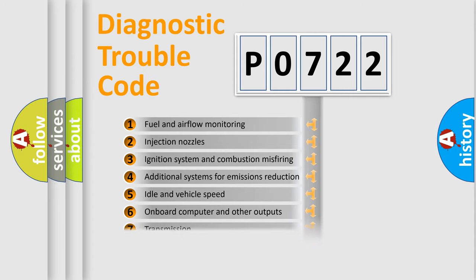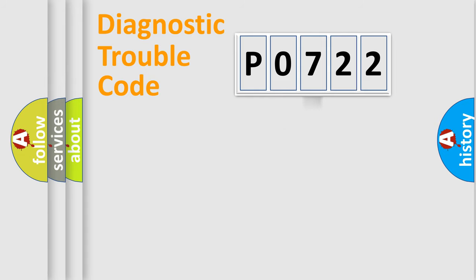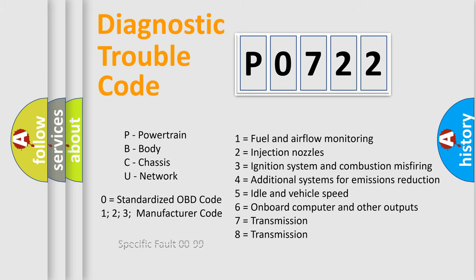The distribution shown is valid only for the standardized DTC code. Only the last two characters define the specific fault of the group. Let's not forget that such a division is valid only if the second character code is expressed by the number zero.